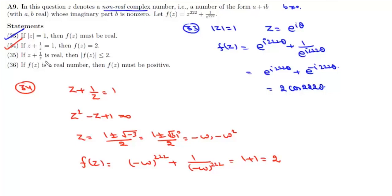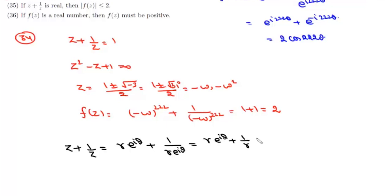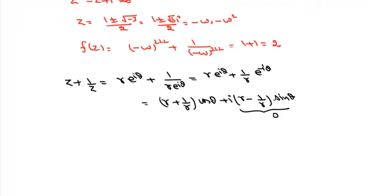Statement 35 says: if z + 1/z is real, then |f(z)| ≤ 2. Given z + 1/z is real, let z = r·e^(iθ). Then z + 1/z = r·e^(iθ) + (1/r)·e^(-iθ) = (r + 1/r)cosθ + i(r - 1/r)sinθ. For this to be purely real, the imaginary part must be zero, so either r = 1 or sinθ = 0.